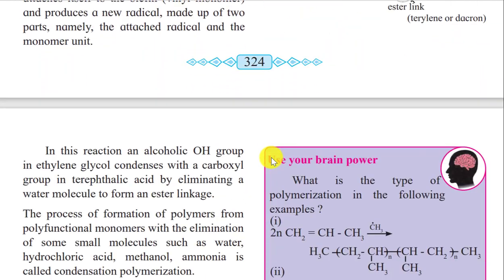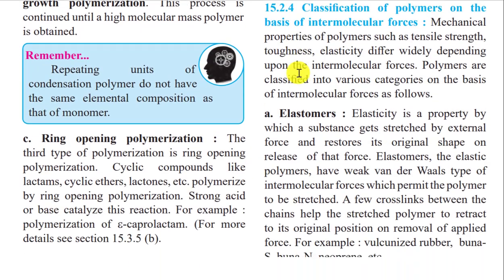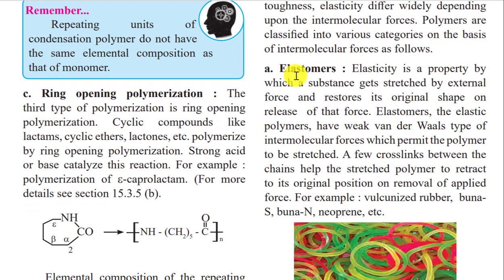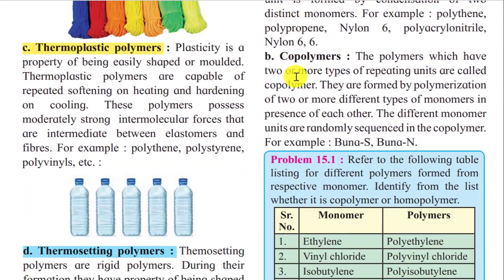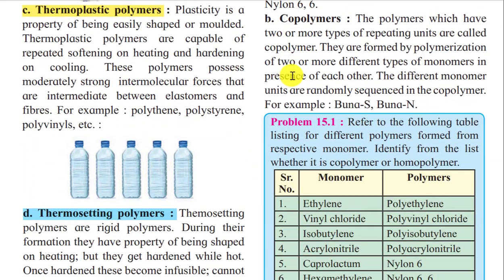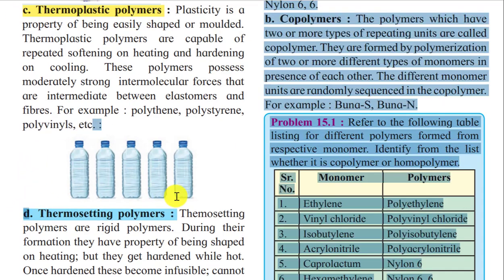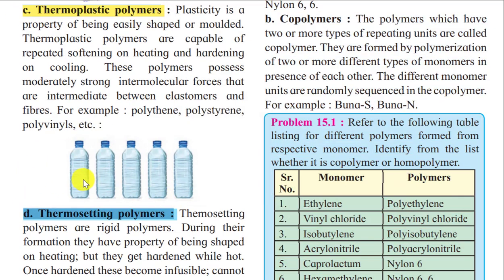Let's see what can come in the exam. At least 4 marks can be asked from this chapter, and 4 marks are very necessary to pass and to score high. Thermoplastic polymers can be asked, okay, and thermosetting polymers as well.